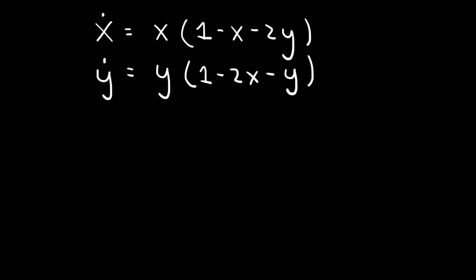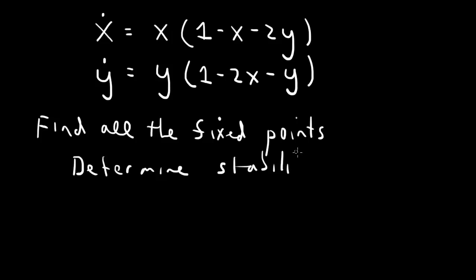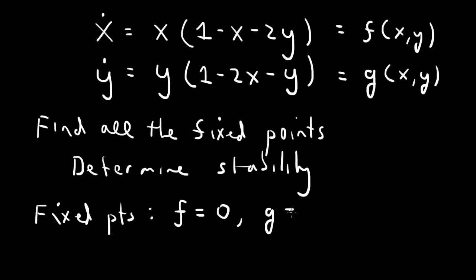Let's consider the system of nonlinear equations. x-dot, or dx/dt, is equal to x times (1 minus x minus 2y). And y-dot equals y times (1 minus 2x minus y). So this is some function f of both x and y, and this is some other function g of x and y. To find the fixed points, we set f and g to zero.